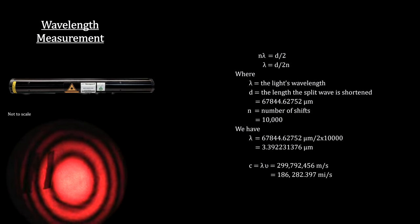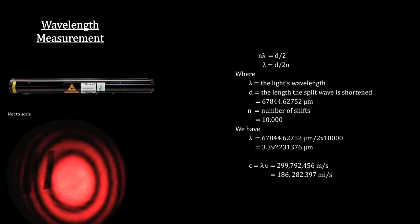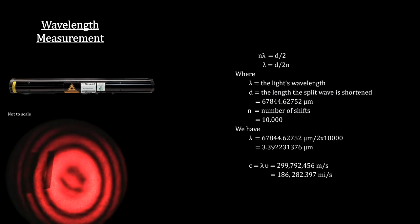This measured wavelength, along with the measured frequency, gives us the speed of light at 299,792,456 meters per second.